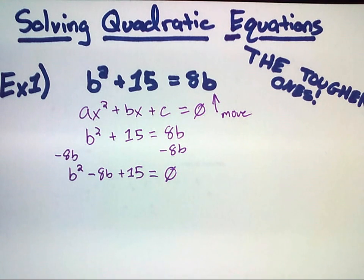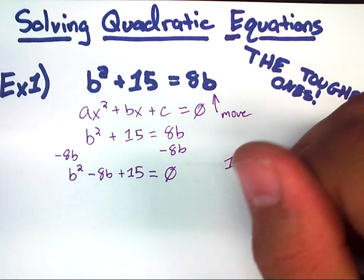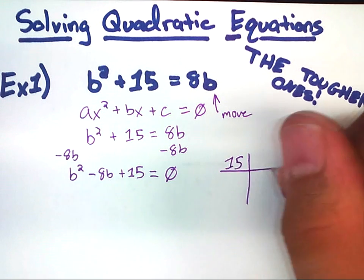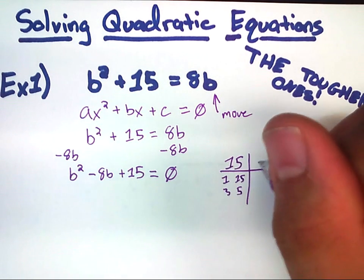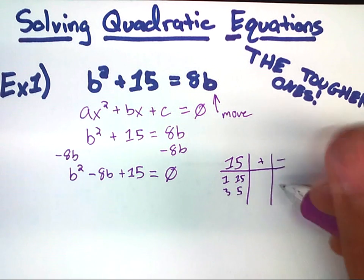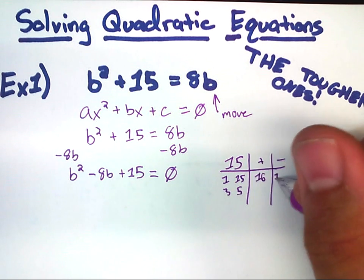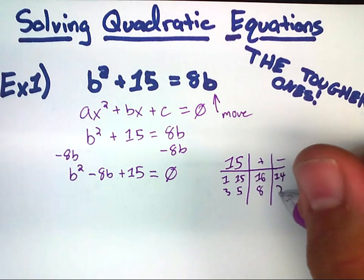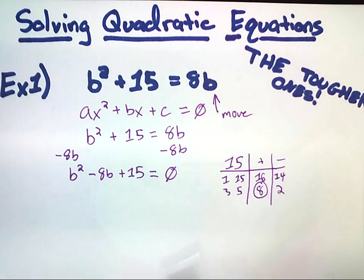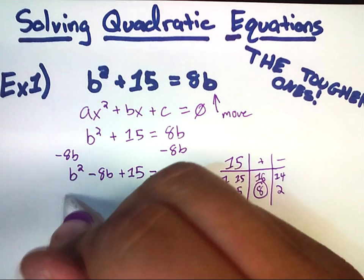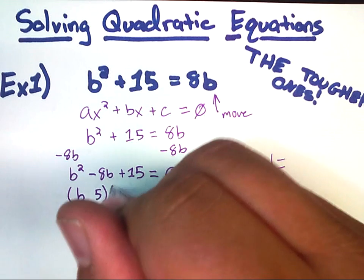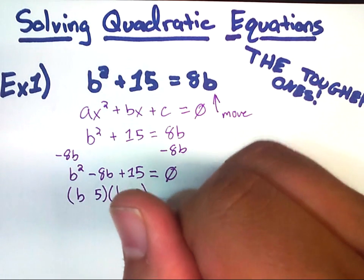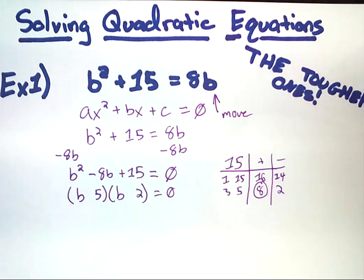From this point on over, now all we have to do is factor and solve for the roots. The factors of 15 shouldn't take too long. I think there's only 2. 1 and 15, 3 and 5, add and subtract. So that's 16, 14, 8, and 2. I happen to be looking for 8 because that's in the middle term. So, my factors are going to be b with a 5 and b with a 2. Still equal to zero.